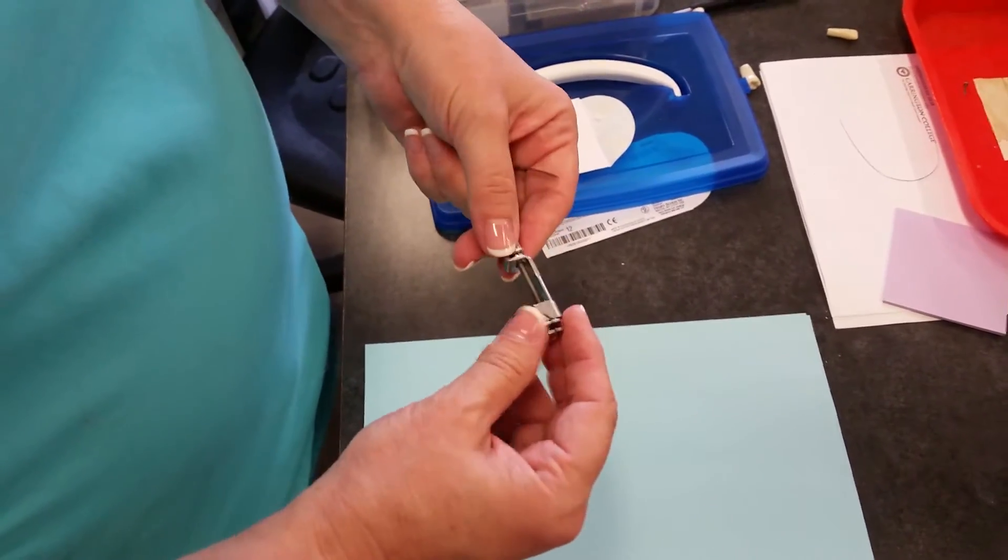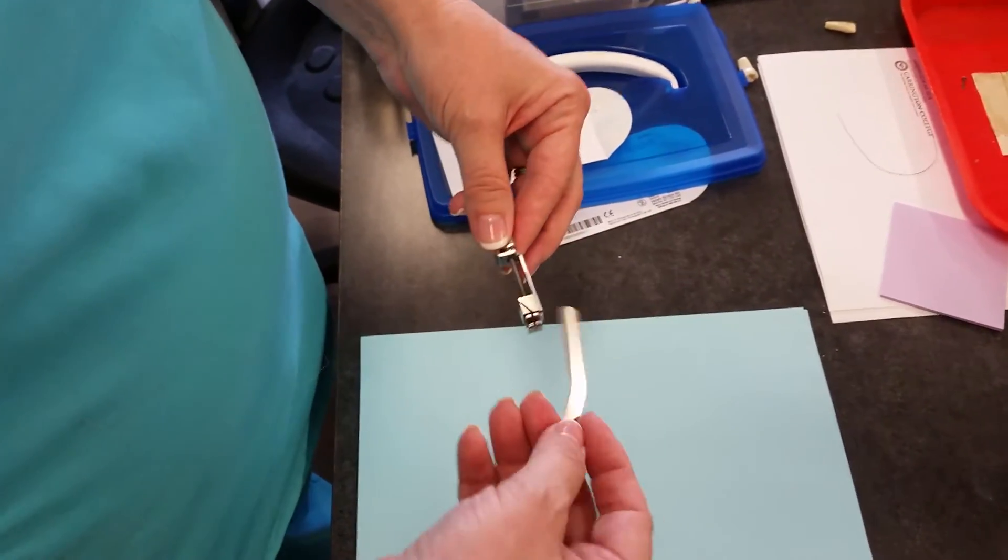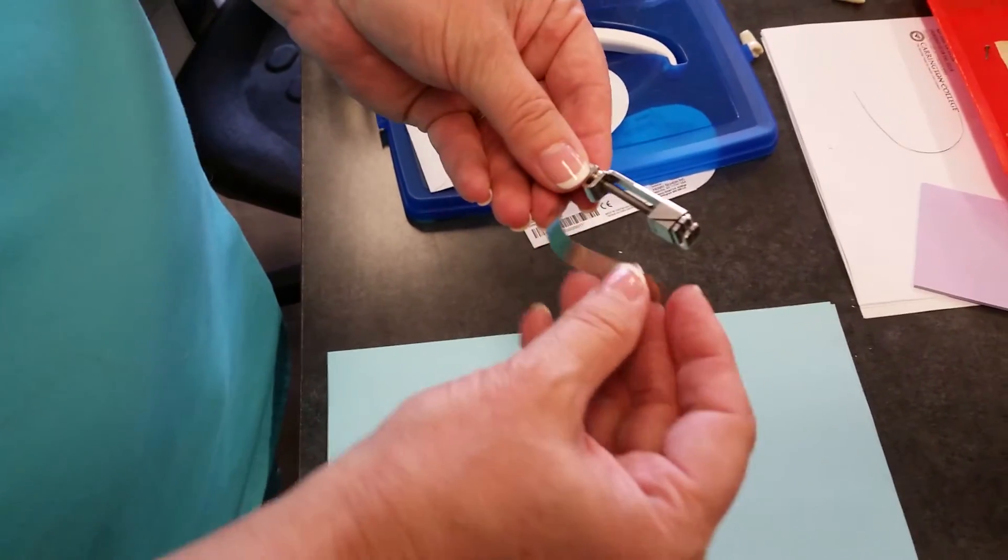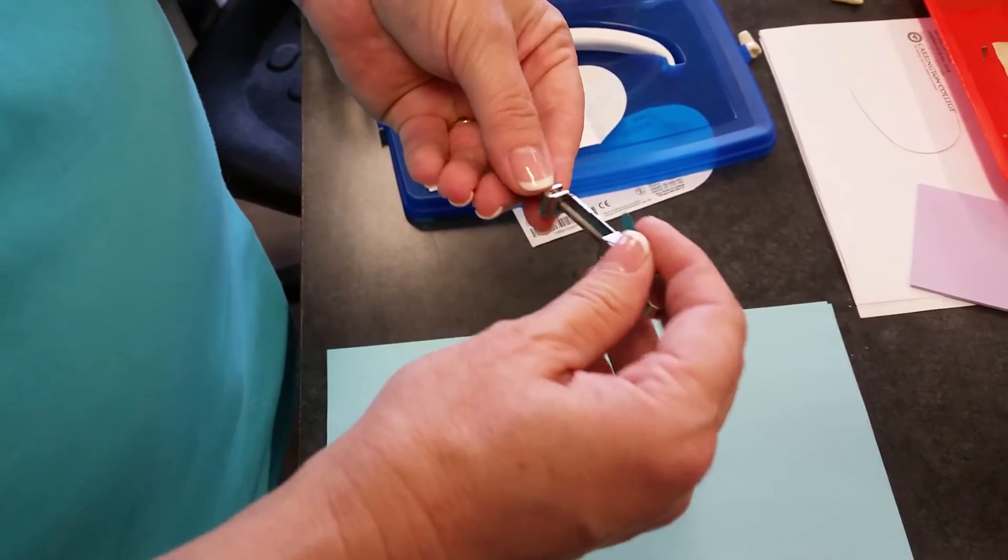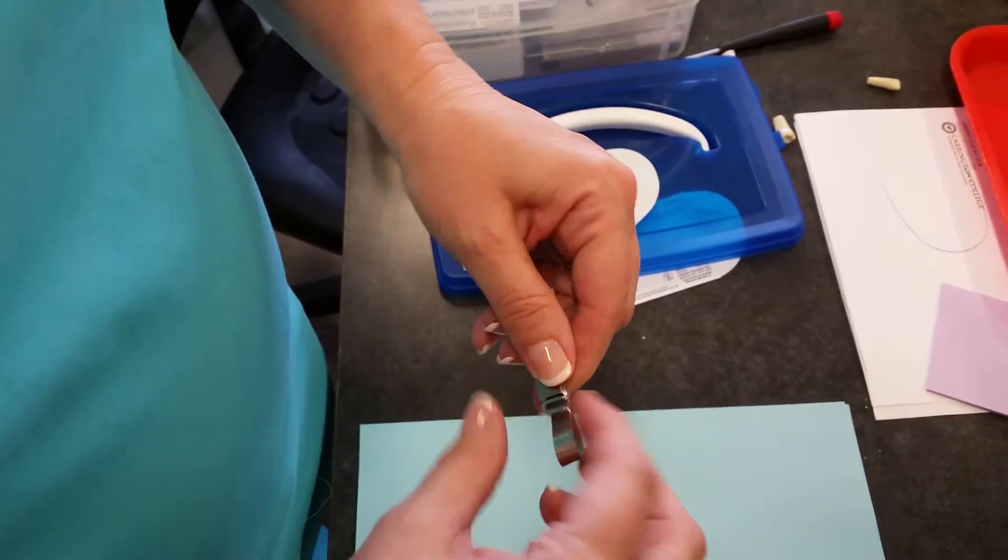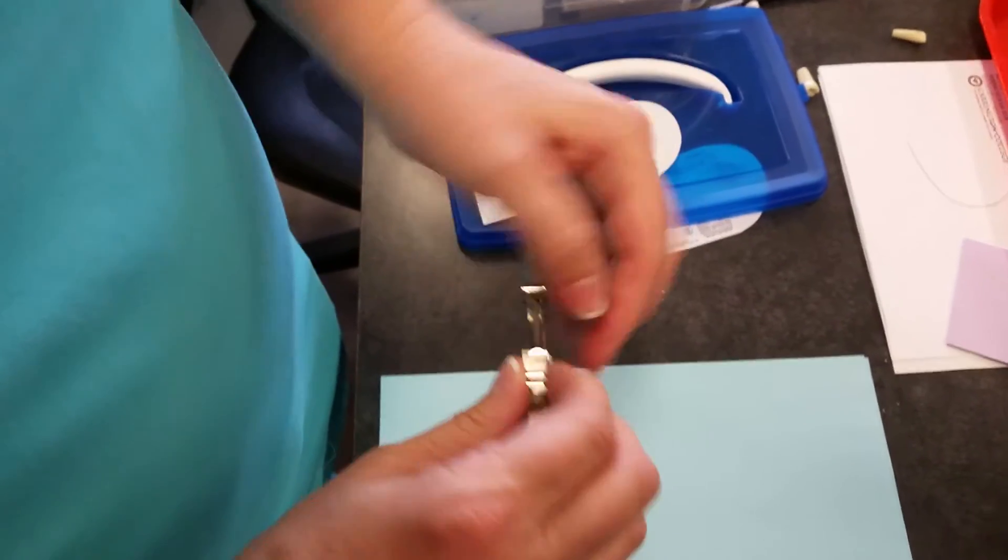The block is against the guide channels and then you have your matrix which is going to be smiley side facing up. So smiley up, guide channels up, place it right into the guide channels with just a small little tail sticking out.